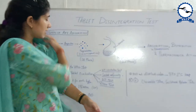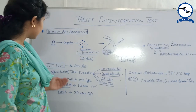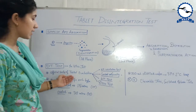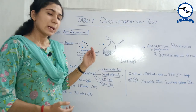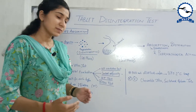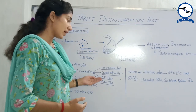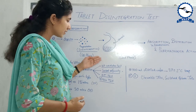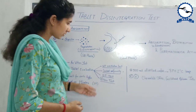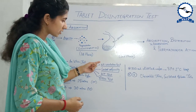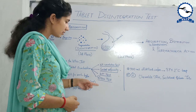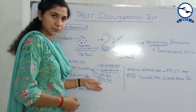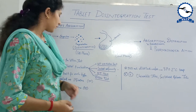The DT test comes under the official tests of tablet evaluation. This is mentioned in the IP and it has 4 parts: the weight variation test, content uniformity test, DT test, and dissolution test.